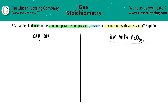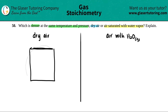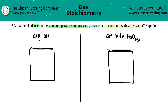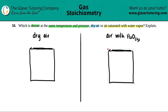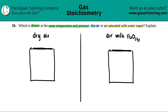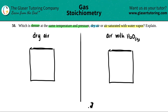I'm going to draw a container — look at that lovely drawing — and copy it over here so we have the same container. At the same temperature and the same pressure, if we look at PV = nRT, the n value is going to stay the same, so we have to fit the same number of moles in each container.